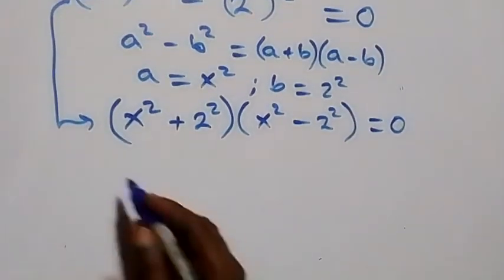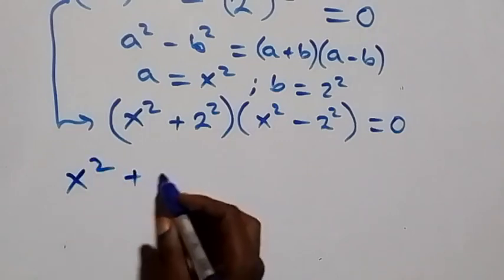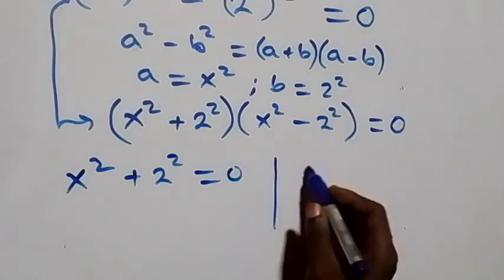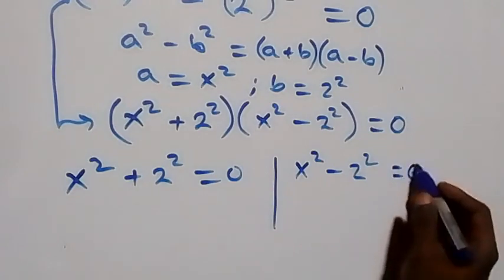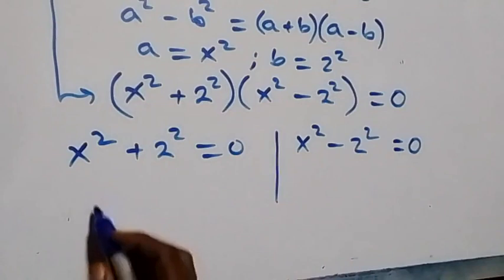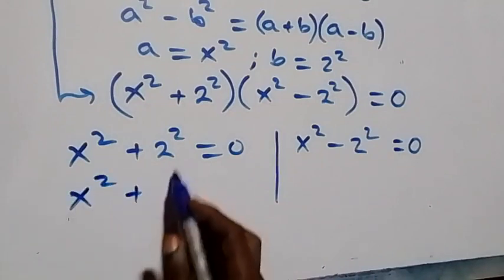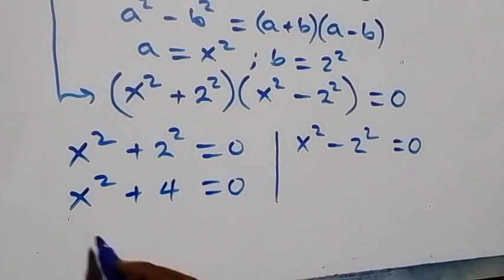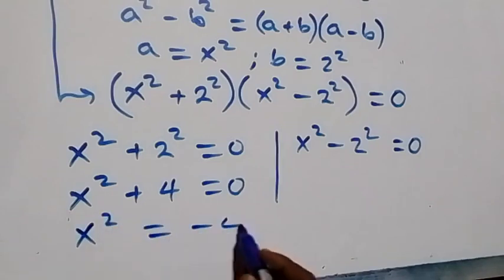Taking the first factor, x squared plus two squared equals zero, which is the same as x squared plus 4 equals zero. This gives us x squared equals minus 4.